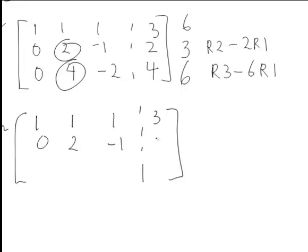But now doing this operation, R3 minus 2R2, we get 0. Then 4 minus 2 times 2 is 0. Negative 2 minus 2 times negative 1 is 0.